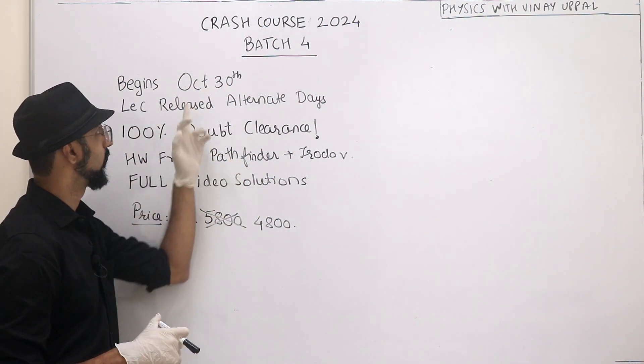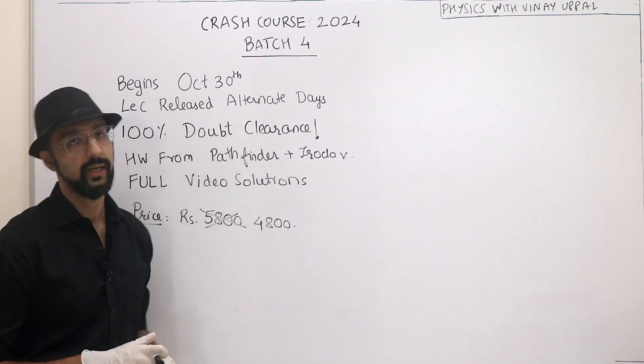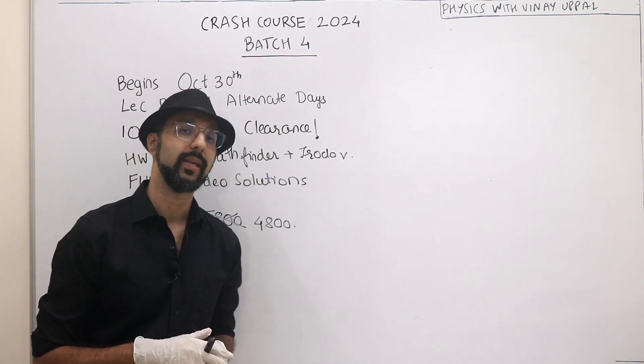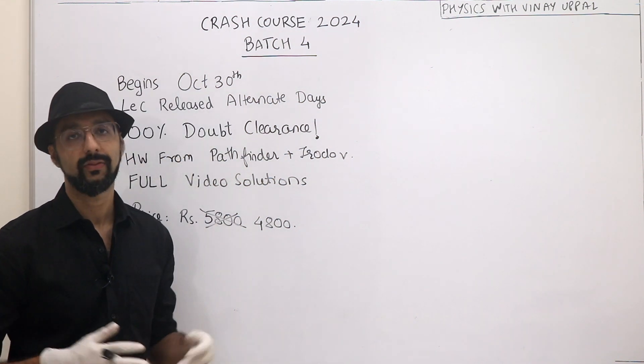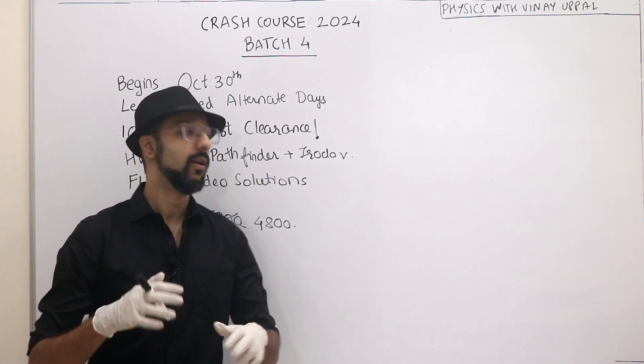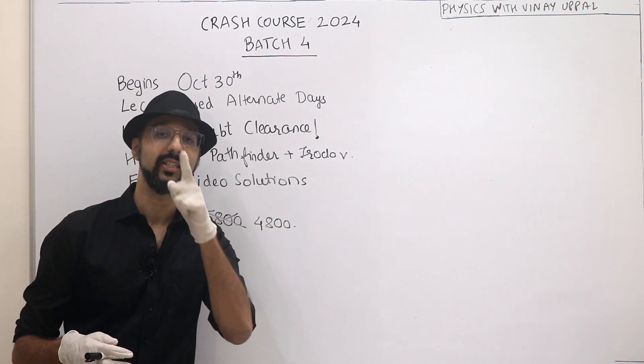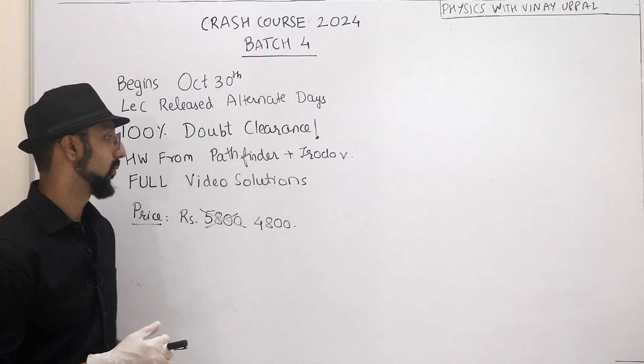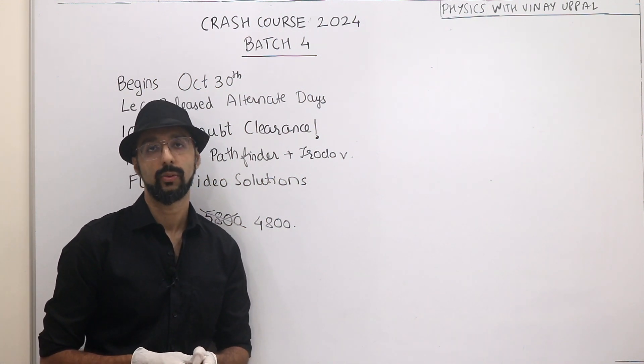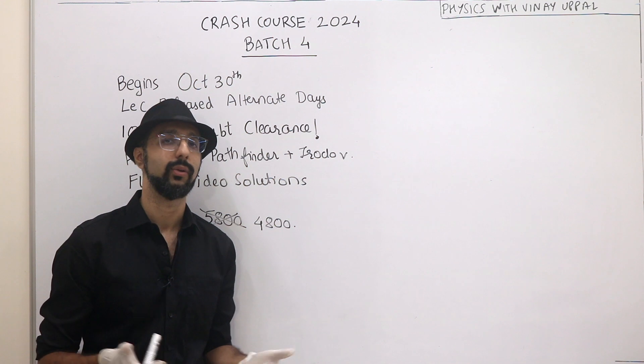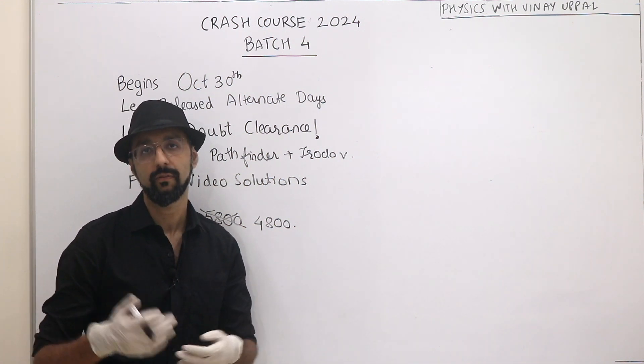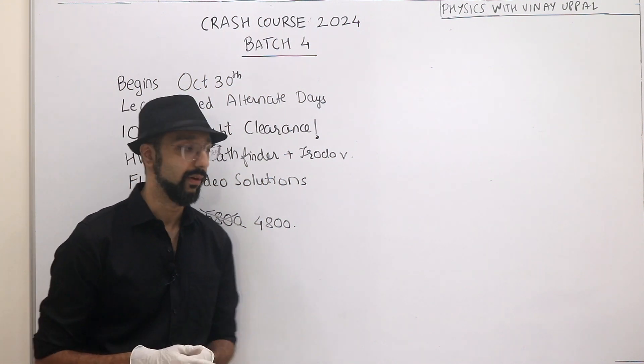Homework for the crash course batch is from Pathfinder and a few other sources. Majority is from Pathfinder. When I counted last time, around 540 problems with full video solutions to each and every single problem. You will have those video solutions access till the day of JEE Advanced 2024. You can access the video solution to any problem that you want from the list of problems that are relevant to JEE Advanced.